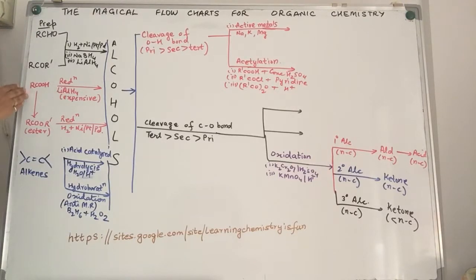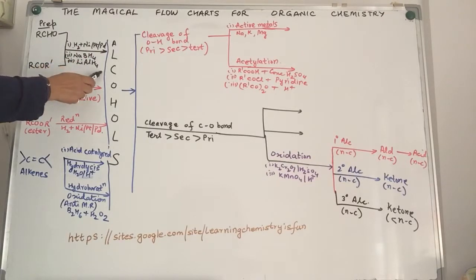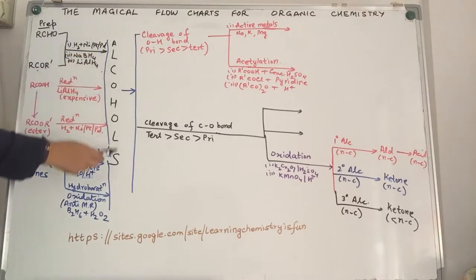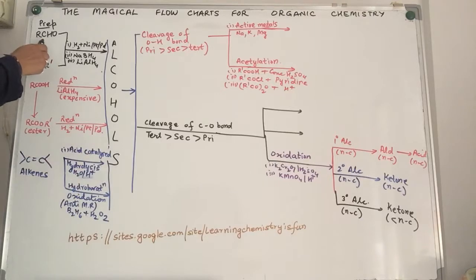On the left hand side of the flow chart you will find various methods to prepare alcohols. Alcohols can be prepared from aldehydes, ketones, carboxylic acid esters, alkenes, and so on. How do we prepare from aldehydes? We reduce it with catalytic hydrogenation, using hydrogen gas in the presence of nickel, platinum or palladium, or use reducing agents like sodium borohydride or lithium aluminium hydride. Similarly, ketones can also be reduced to give you the corresponding alcohols.